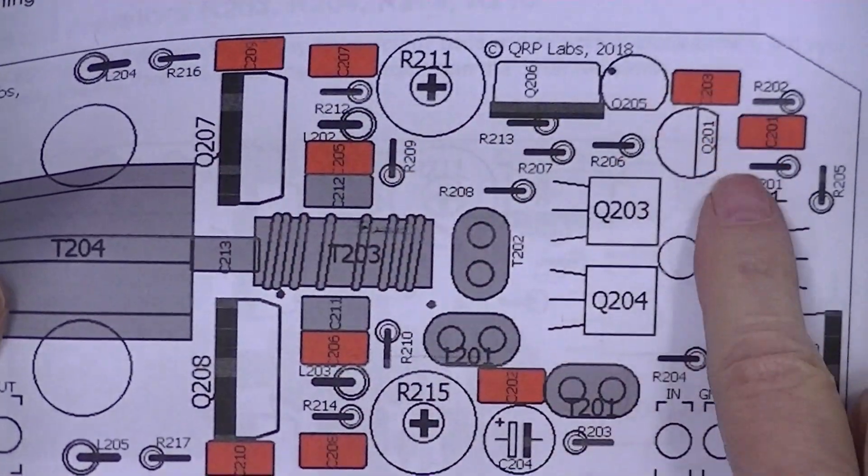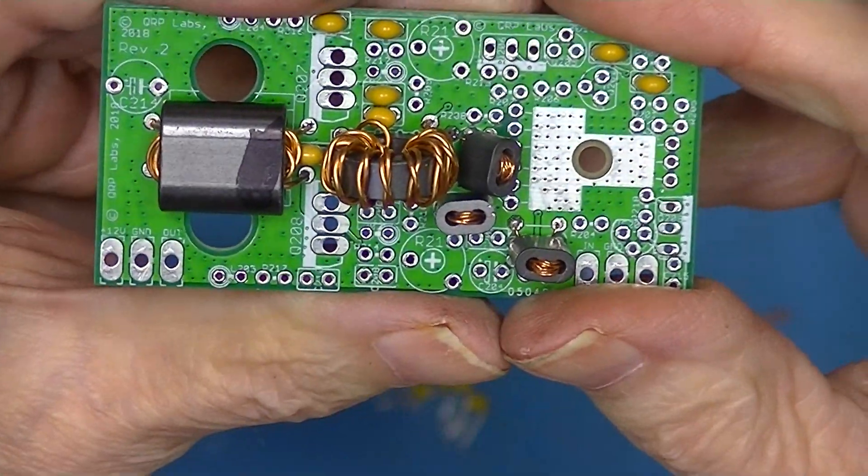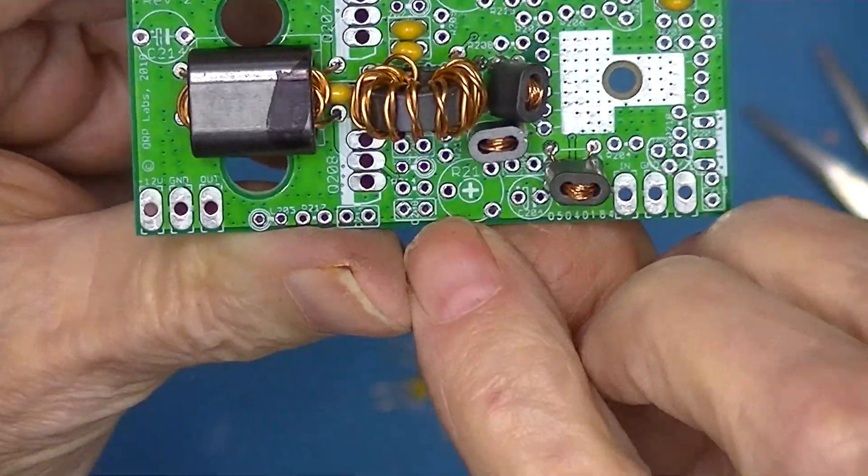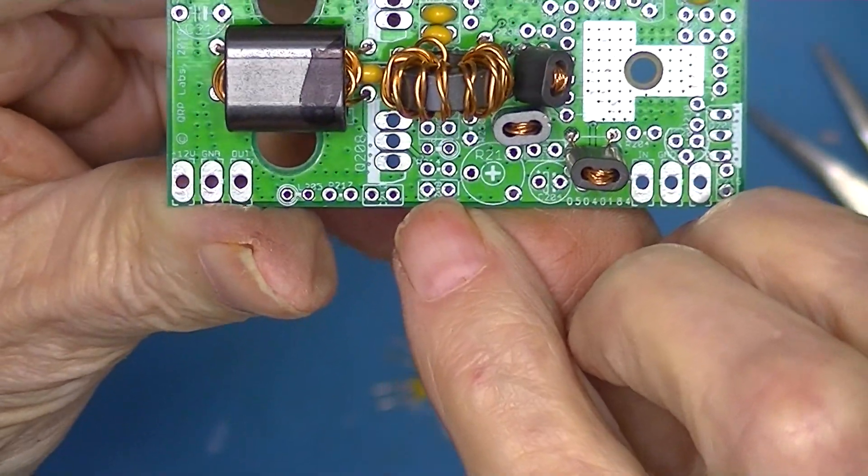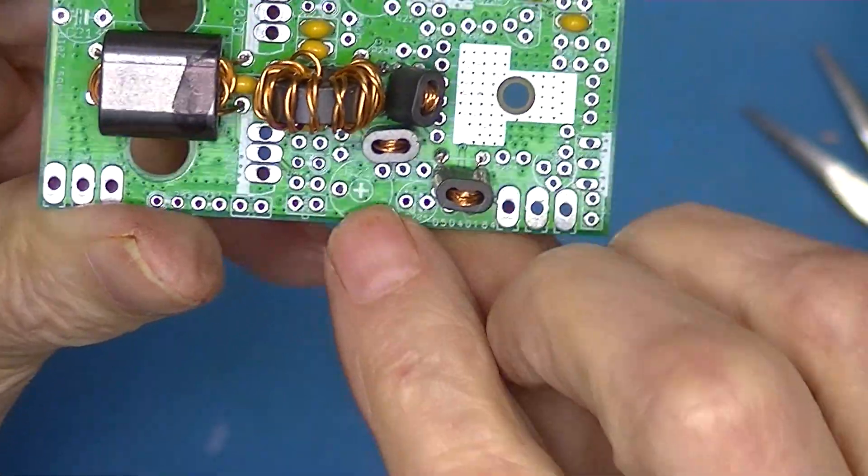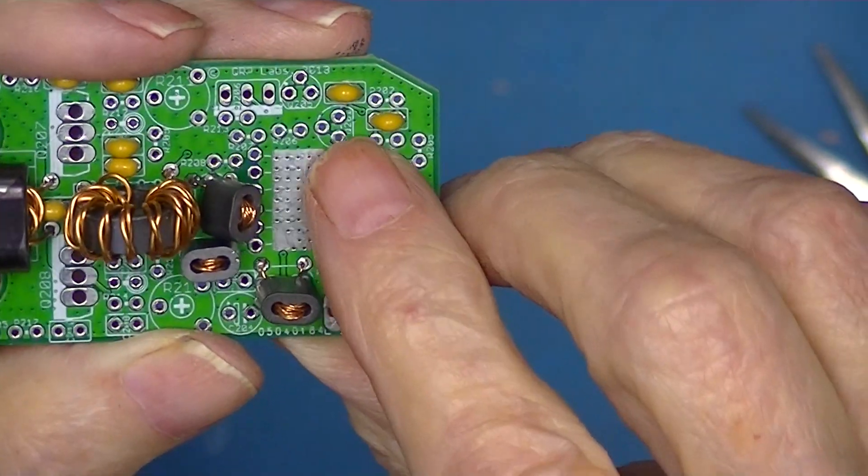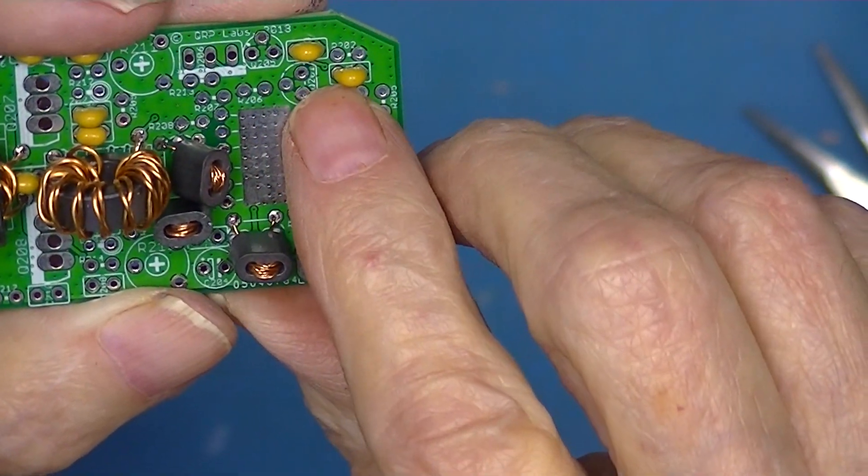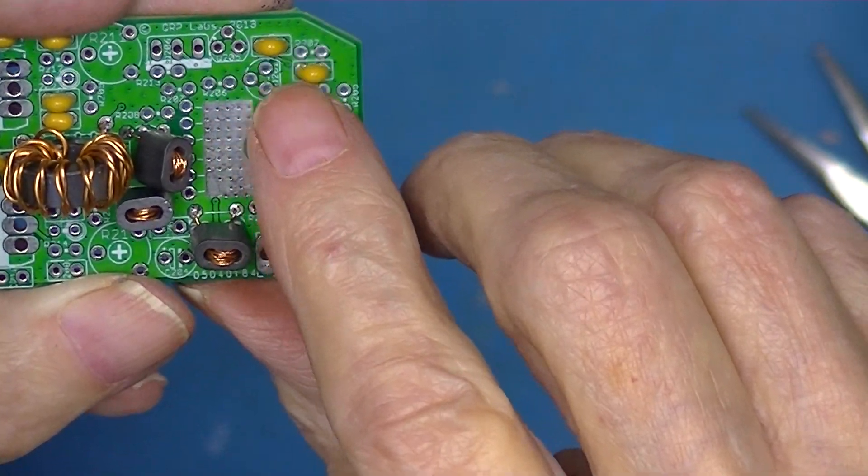So we installed all ten of these. Now all of the capacitors have little rectangular boxes around them. Here, here, here, here, here. So make sure you're installing them in little rectangular boxes.